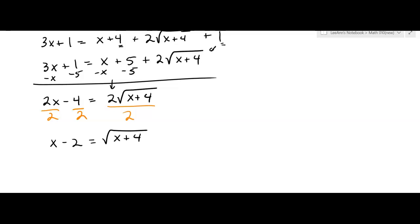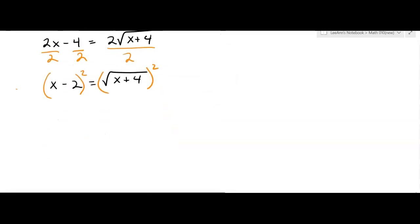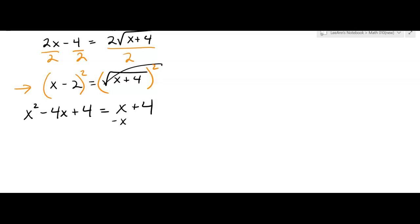Now I have the radical isolated on the right hand side, so I square both sides to get rid of it. On the left I foil the binomial x minus 2 squared, and on the right the square root and the square cancel. This gives a quadratic equation, so I set it to zero by subtracting x and 4 from both sides, giving x squared minus 5x equals 0.